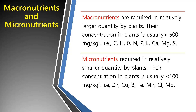Micronutrients are required in relatively smaller quantities by plants — their concentration in plants is usually less than 100 mg/kg. These include: zinc, copper, boron, iron, manganese, chloride, and molybdenum.